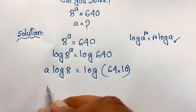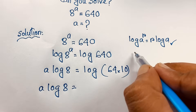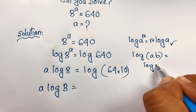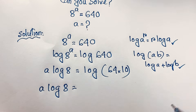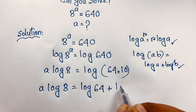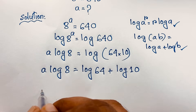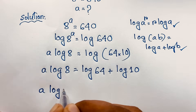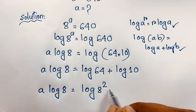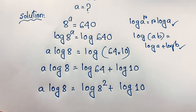So we have a·log8 = log(64 × 10). Applying the log product rule — log(ab) = log(a) + log(b) — this becomes log64 + log10. Since 64 = 8², we can write log64 = log(8²) = 2·log8. So the right side is 2·log8 + log10.